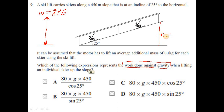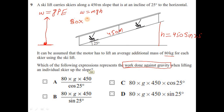Using the right-angle triangle: the hypotenuse is 450 m and the vertical height is 450 sin 25°. Therefore, work done against gravity = mgh = 80 × g × 450 sin 25°. The answer is option D.